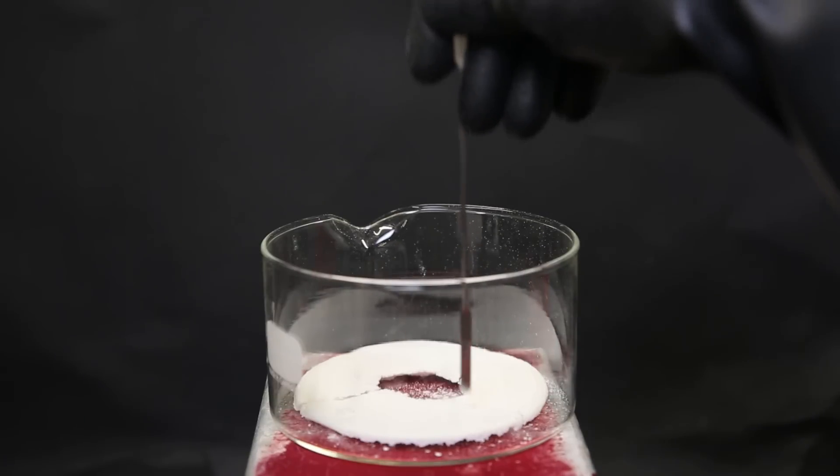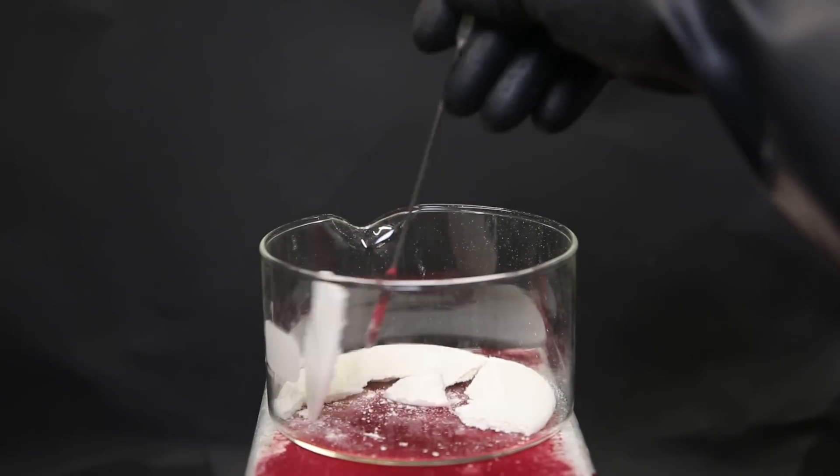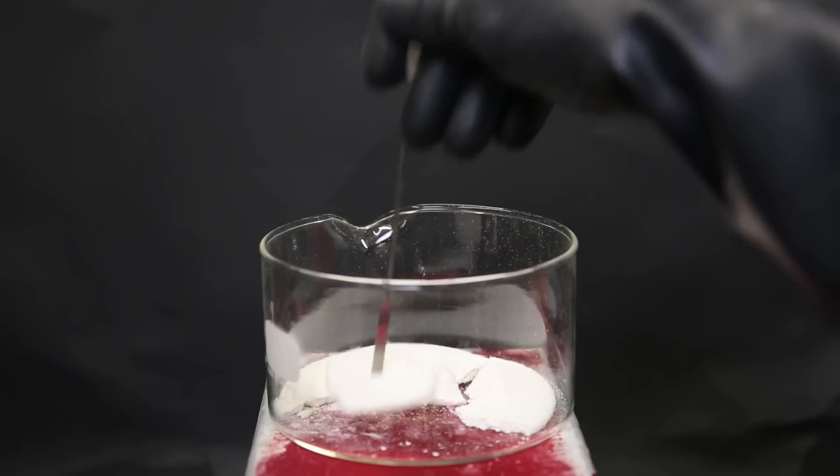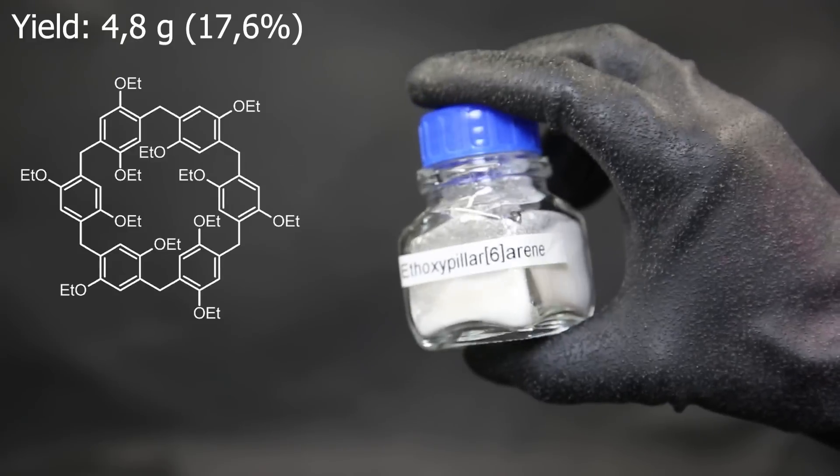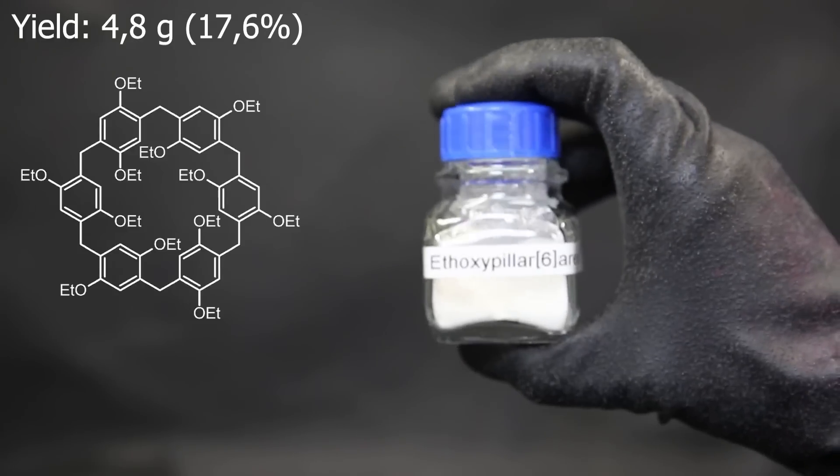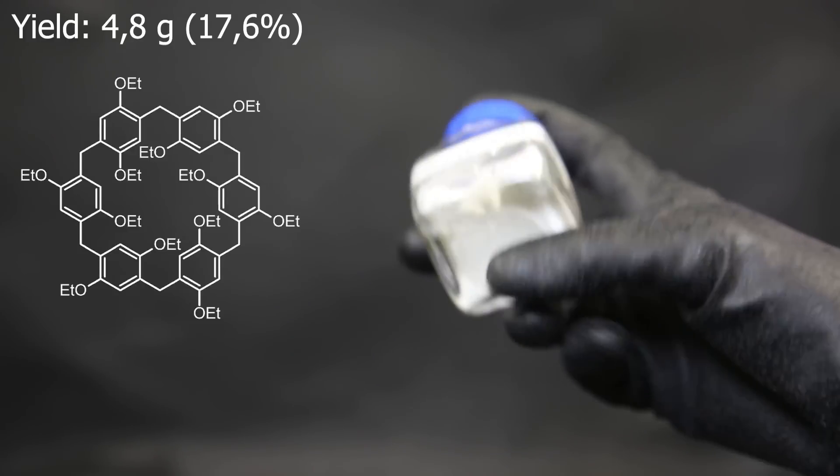I poke around a bit with a spatula, and we can see that it crumbles quite easily. So to turn it into a powder, I simply crushed it. After crushing it and putting it into a small flask, I am left with some nice white powder, which should be almost pure ethoxypillar-6-arene. I will link the procedure I was following in the description.